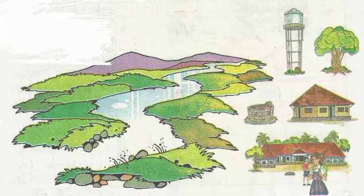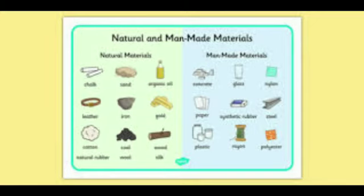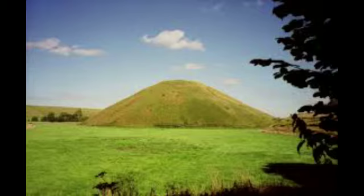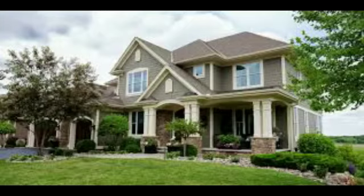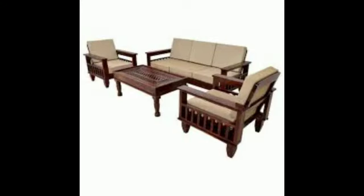Some things are man-made while others have formed naturally. Let us study the terms natural and man-made. Rivers, trees, hills, and grass are natural. Houses, wells, and furniture are man-made. Man-made objects are made from natural resources.